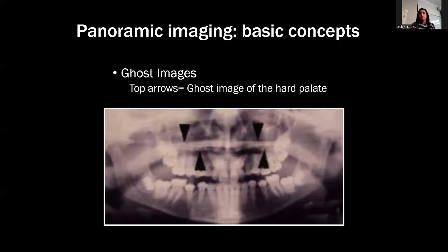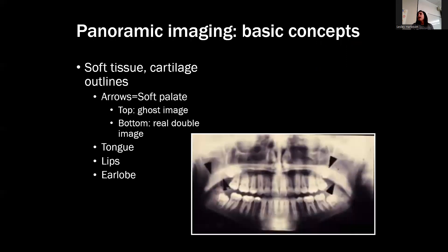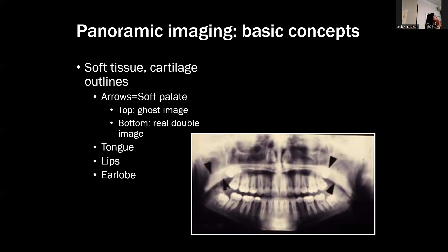Here's another ghost image of the hard palate. The soft palate over here - this is more of a double real image, but you also get a ghost image of it. You can also see other soft tissue and cartilage outlines - sometimes you can see the earlobes, the soft tissue of the nose, soft tissue of the lips or tongue - it just depends on how you position the patient and the patient's anatomy.